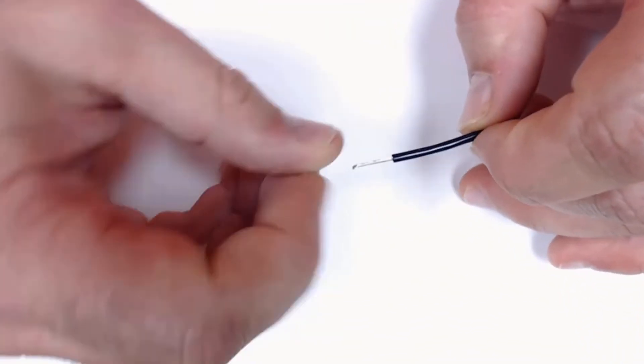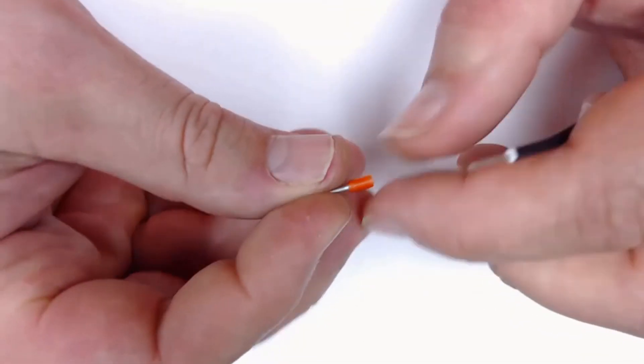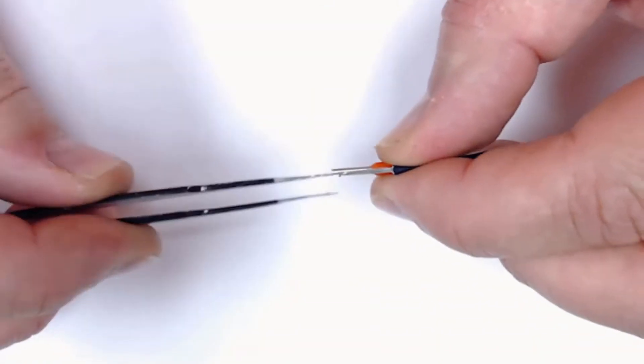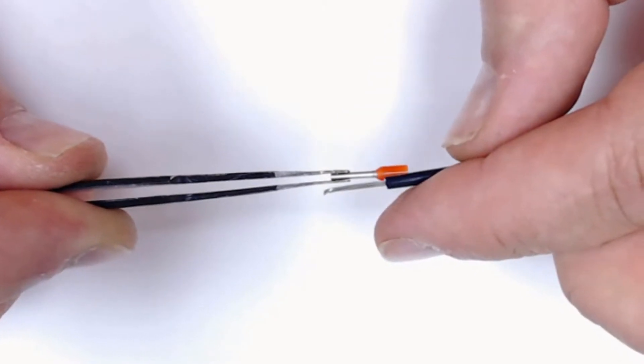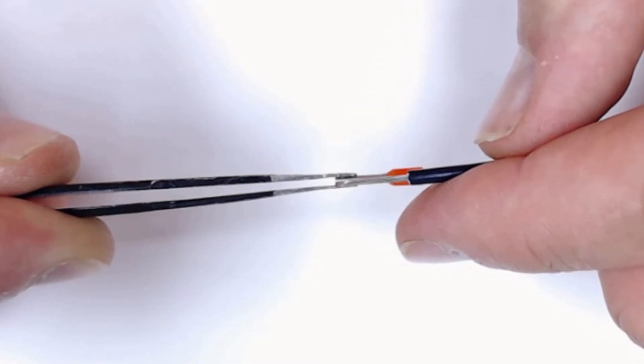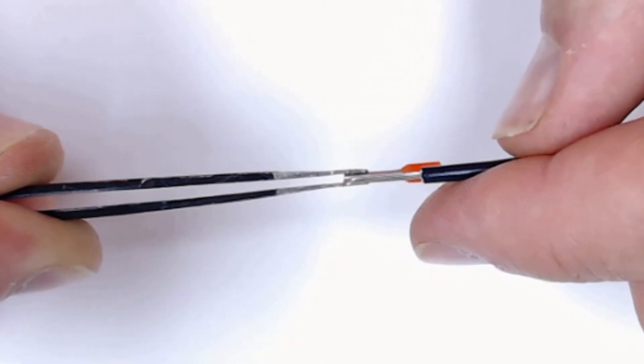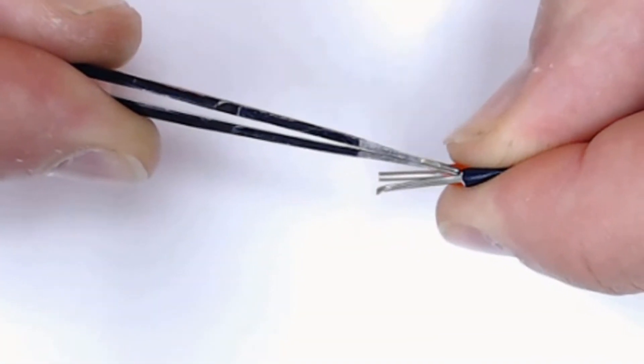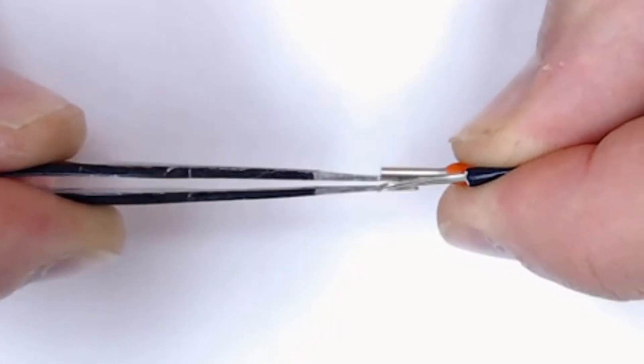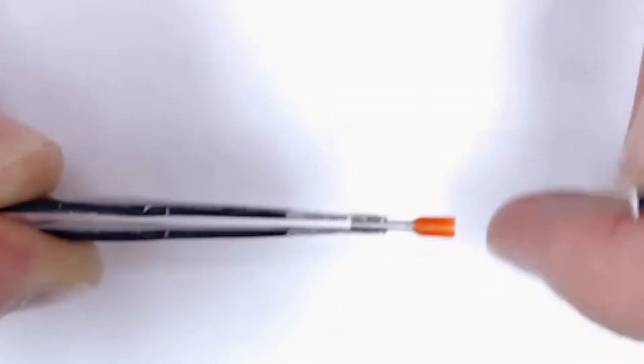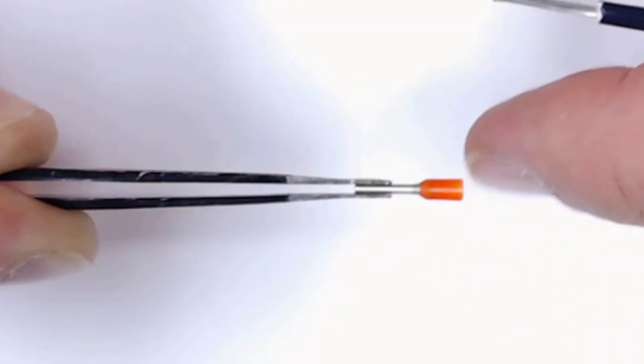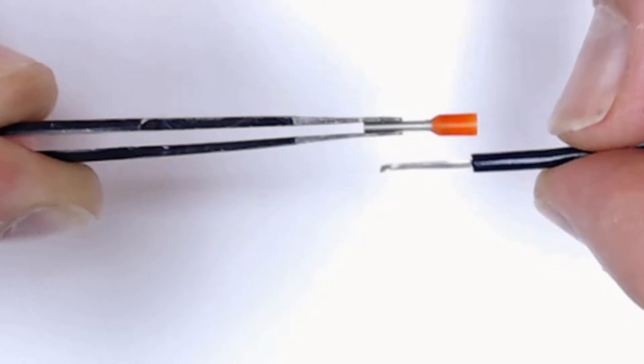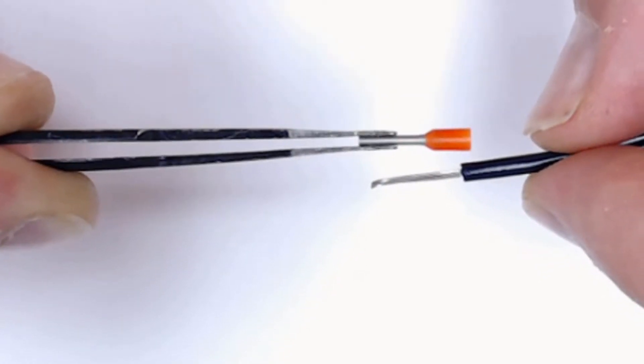Now that we have our wire stripped back, we want to make sure that our strip length is correct. What we're going to do is hold this up next to the ferrule. As you can see, when we're flush with the ferrule, we've got a little bit of extra wire here. That's okay, because the shroud around this ferrule is going to cover up that extra wire and also engage the insulation.